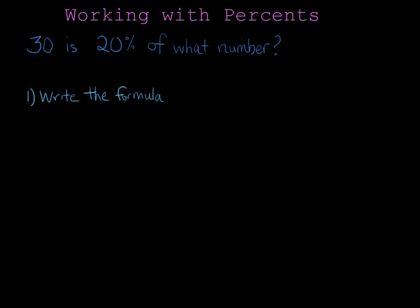So the first step, as always, is to write the formula, which is percent over 100 equals part over whole. It's the same formula that we use for all percent problems. P stands for part and W stands for whole.